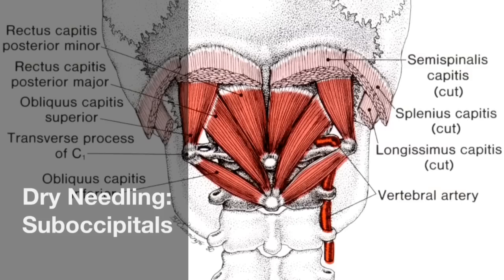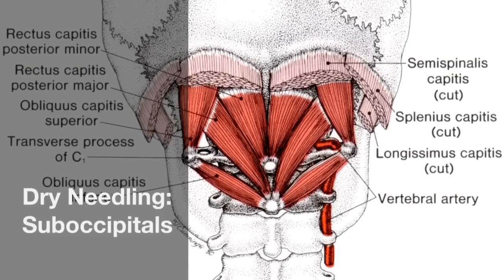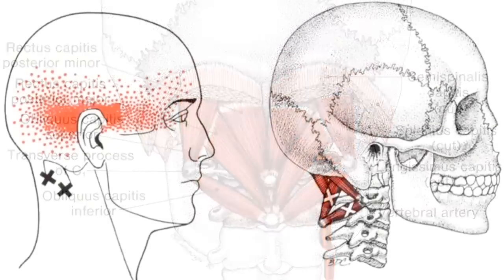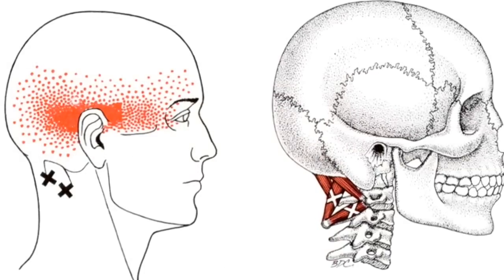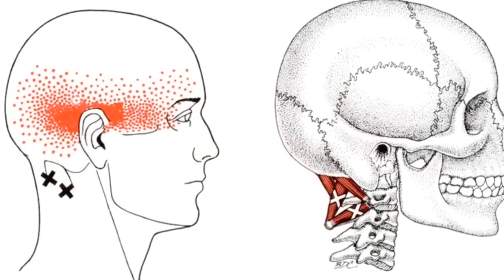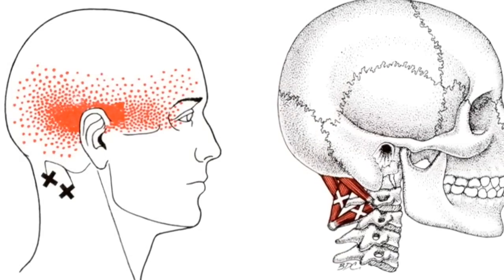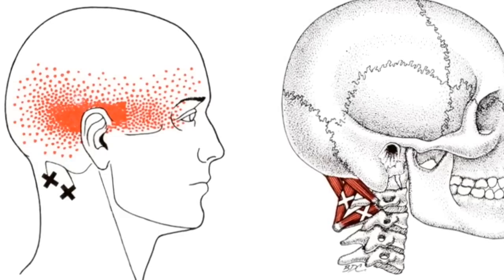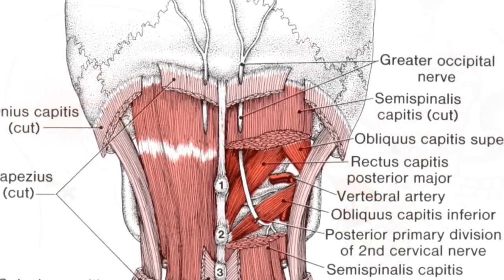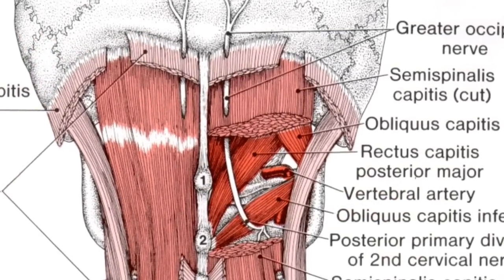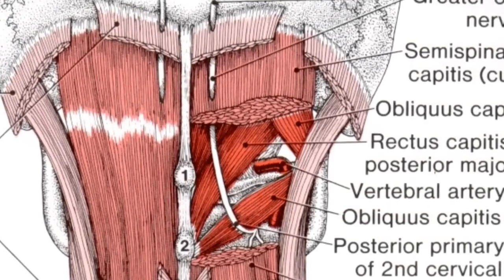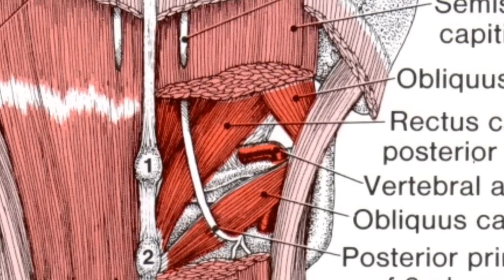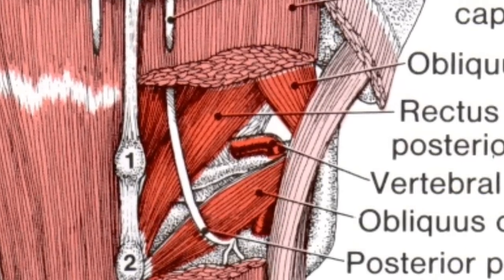This video looks at the dry needling of the suboccipital muscles. The suboccipitals may refer a deep pain spreading laterally from the occiput towards the orbital area, mimicking a tension type headache. The three lateral suboccipital muscles define the suboccipital triangle, which surrounds the transverse portion of the vertebral artery and should be avoided when needling.